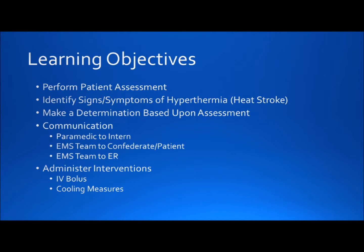The third objective involves determining whether or not to transport the patient based upon the initial diagnosis — the EMS crew will be expected to go forward with the transport. The fourth objective involves effective communication between the paramedic and intern, EMS team to patient and confederate, and EMS team to the receiving ER. As topics such as effective communication can have a bit of inter-rater variability, I would encourage anyone utilizing this scenario to create a simulation rubric validated by your various facilitators. The final objective deals with properly administering interventions — in this scenario, cooling measures such as removing articles of clothing and running fans, as well as administering IV bolus, are appropriate.